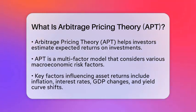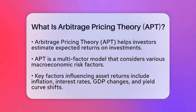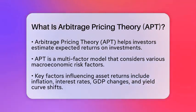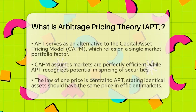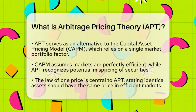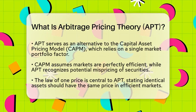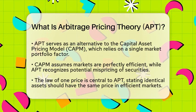APT is a multi-factor asset pricing model. It suggests that an asset's return can be predicted using a linear function that includes different systematic risk variables. These variables can include things like inflation, interest rates, changes in gross domestic product, and shifts in the yield curve.